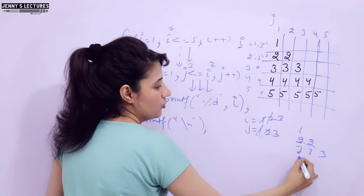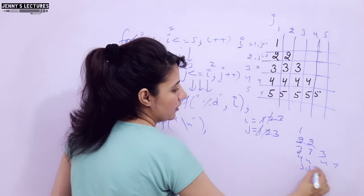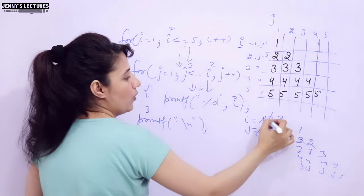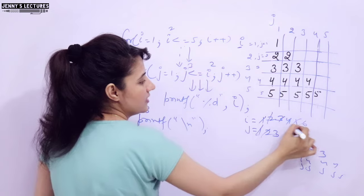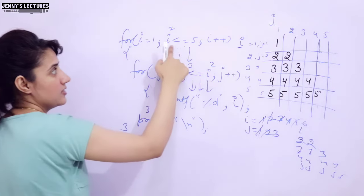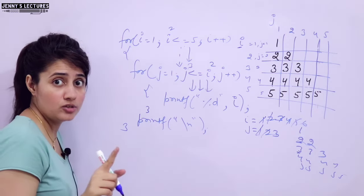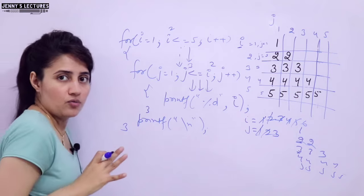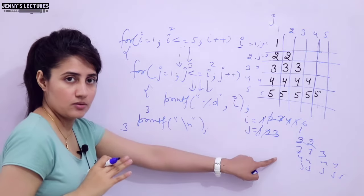Now when i is 3, then 3 3 3 would be printed. Then 4 4 4 4 and 5 5 5 5 5. Once i value becomes 6, 6 is less than equal to 5 — condition is not true — exit from the outer loop. That's it.